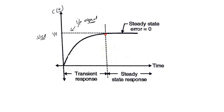After that point, the output of the system becomes constant and we obtain the desired output. This response is known as steady state response. So in time response analysis there are two parts: transient response and steady state response.